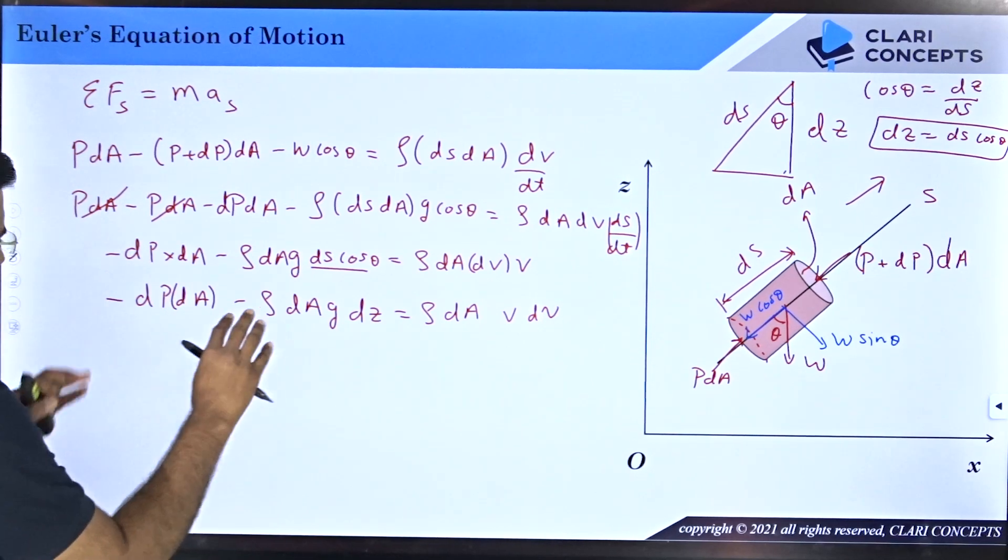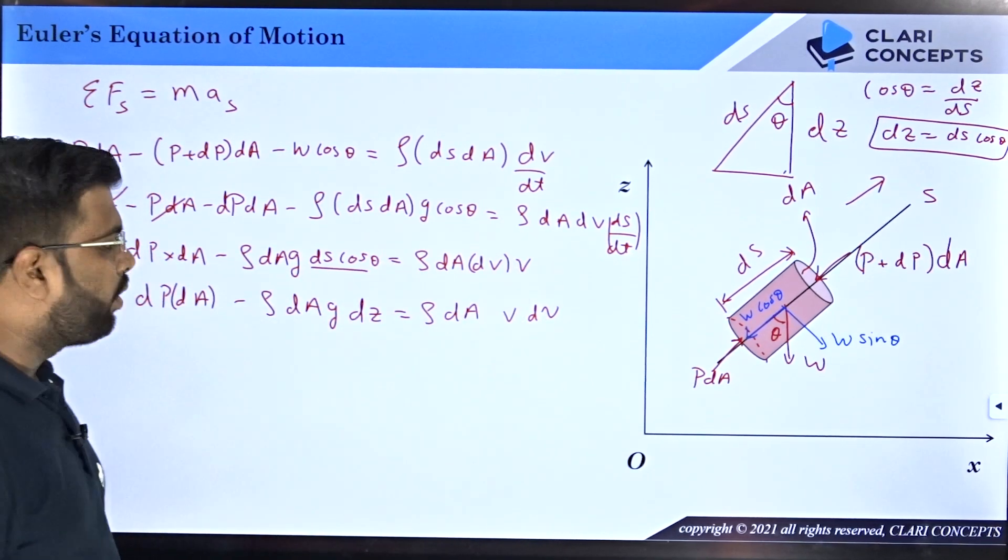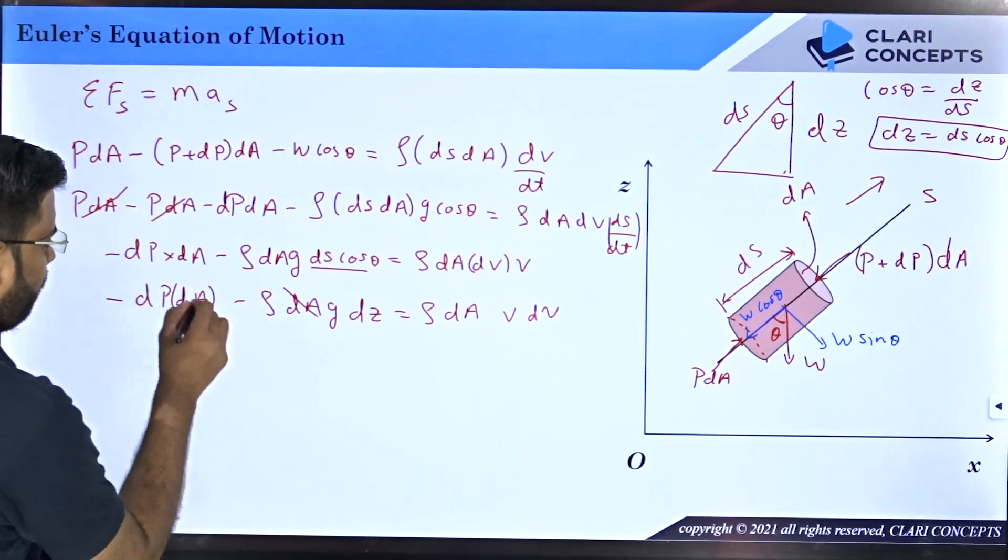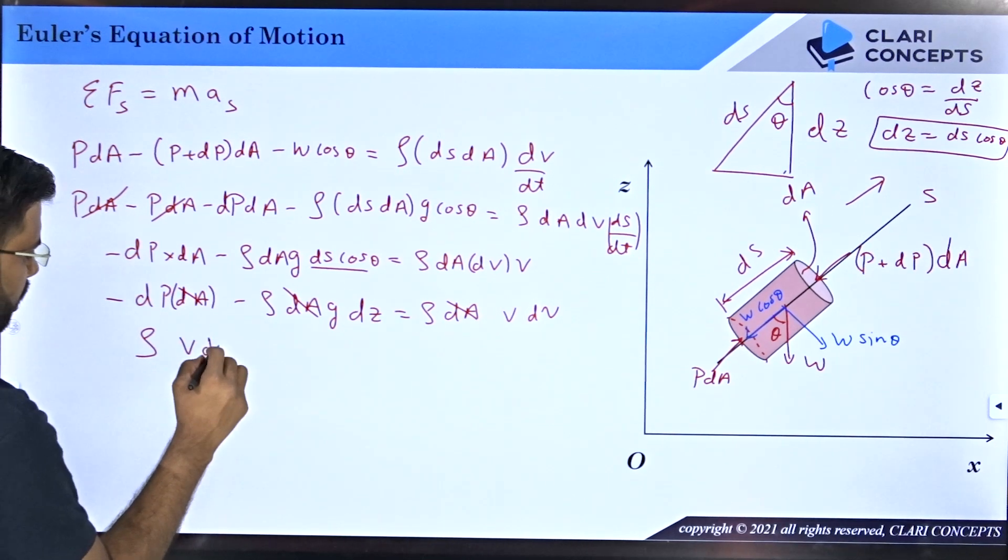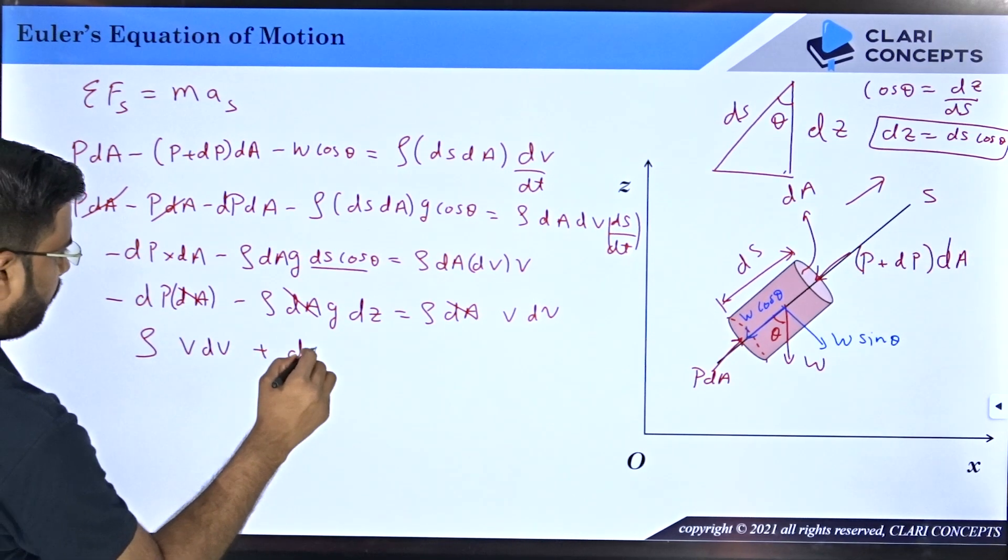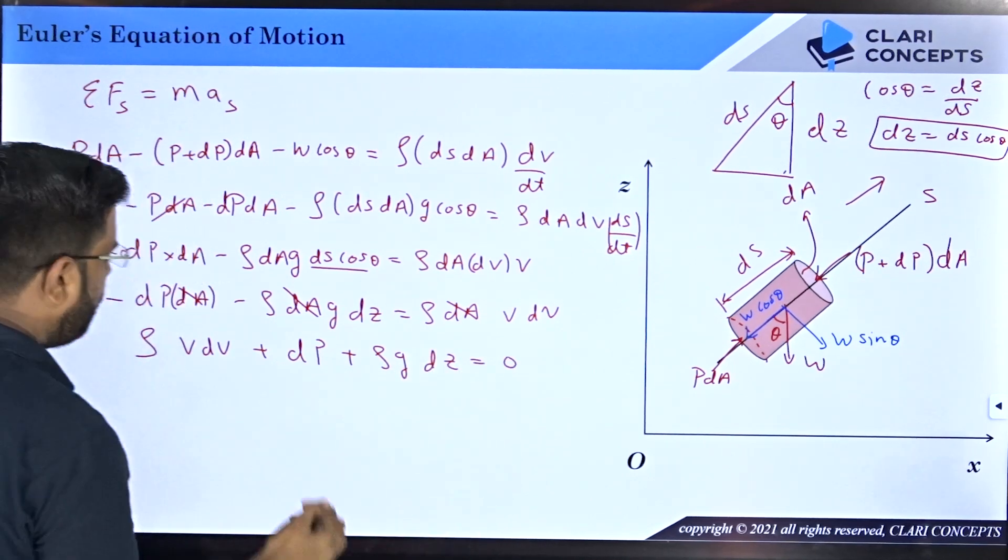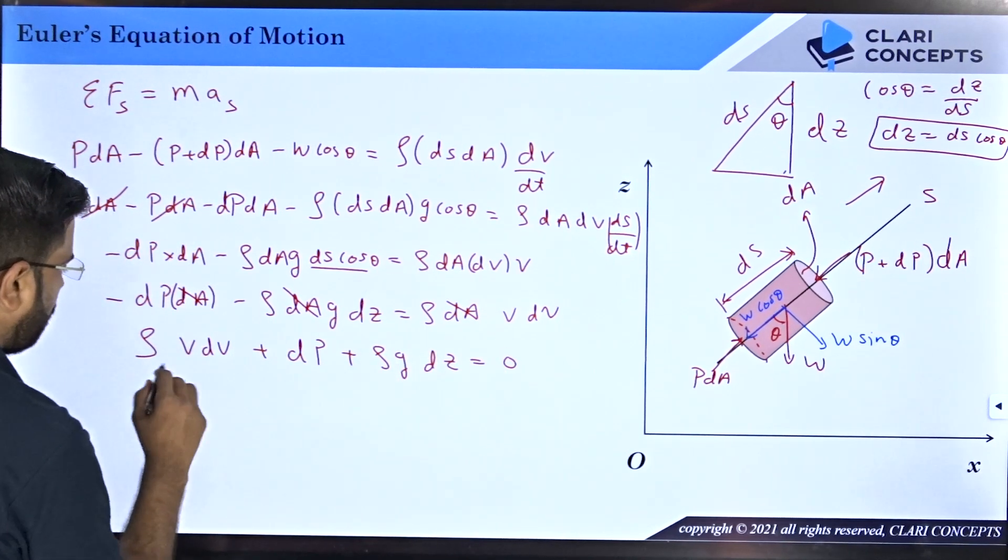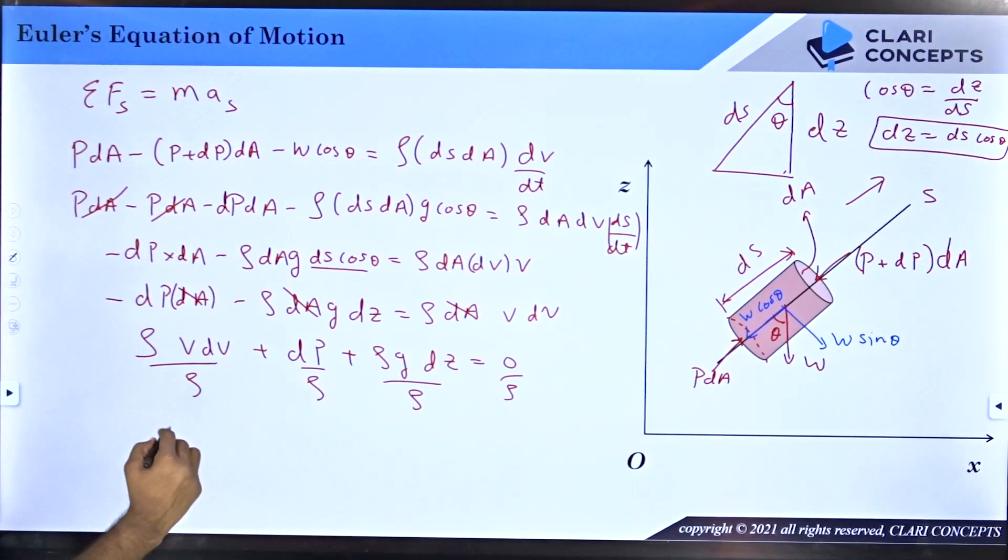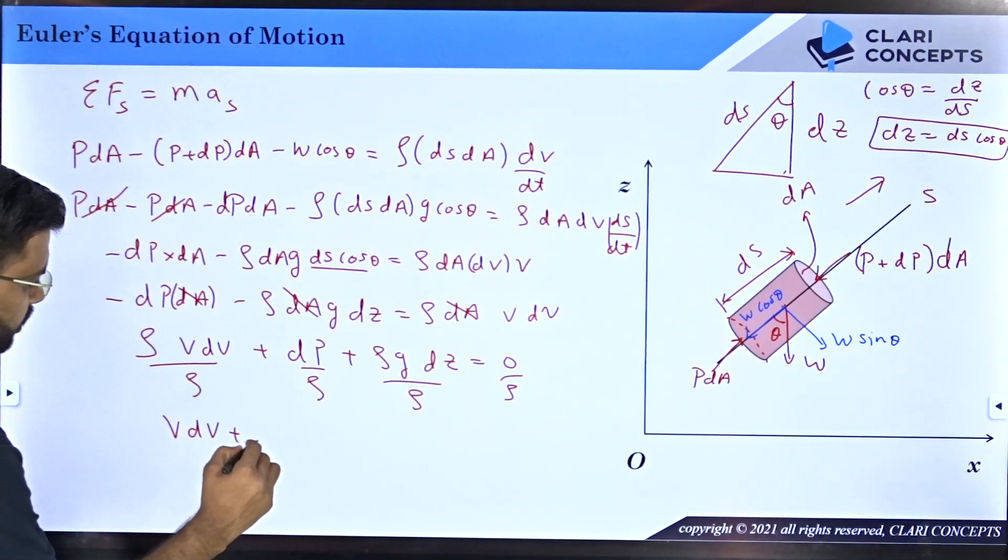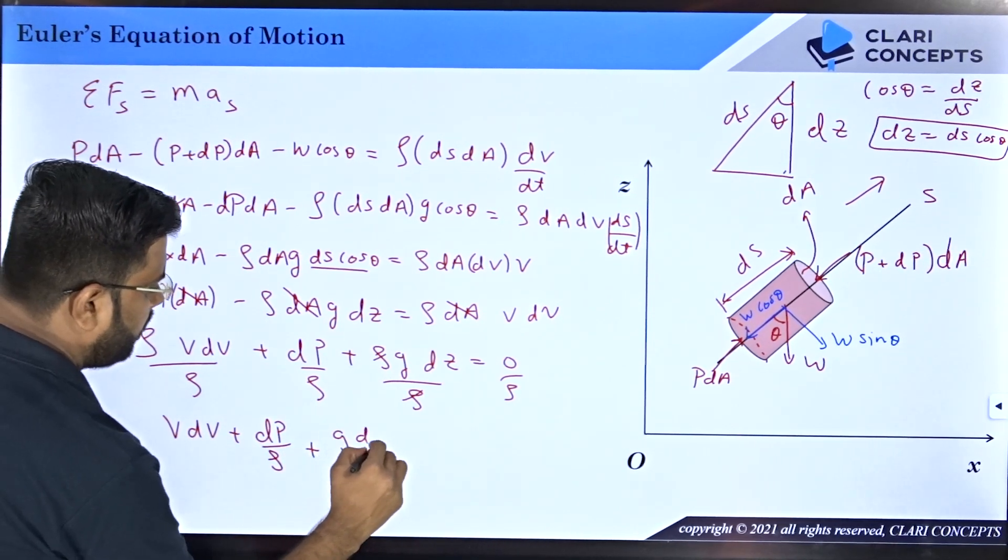So therefore in place of dS cos theta, I can put dZ. That equals rho dA V dV. Now I will take both from the right hand side and equate the equation to zero. I will take dA common and cancel from both sides. What I'm left with is rho into V dV plus dP plus rho g dZ equals zero. Now divide the entire equation by rho.